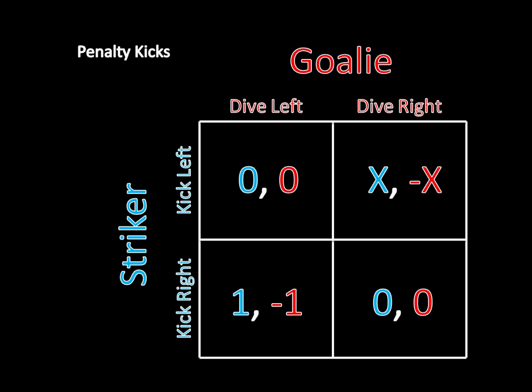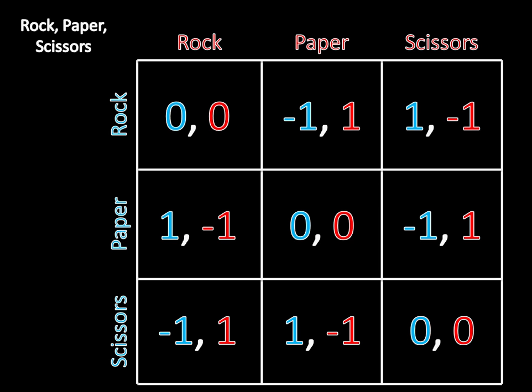But not all games look like this. There are some games with a lot more strategies. For example, Rock, Paper, Scissors is a classic game. That game has three strategies for each player: Rock, Paper, and Scissors, with payoffs listed there. If you think about it, you should be able to reason why there aren't any pure strategy Nash equilibria and why the only Nash equilibrium involves mixing among all three strategies. We'll solve this game formally in a few videos.